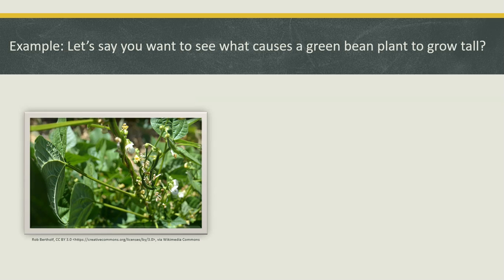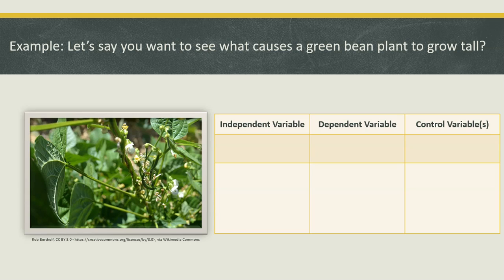Let's walk through an example. Let's say you want to see what causes a green bean plant to grow tall. You'll want to identify your independent variable, your dependent variable, and your controlled variables. Remember: your independent variable is what you change as a scientist. The dependent variable is the effect of what you change — the outcome — and the controlled variables are what stays the same.